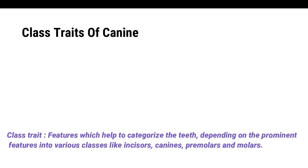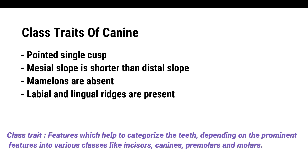Class Traits of Canine: Incisal edges are characterized by a pointed cusp, which is formed by mesial and distal slopes meeting at an angle. The mesial slope is shorter than the distal slope. Canines do not have mammelons but may have a notch on either cusp slope. They have a distinct labial ridge, and a lingual ridge is present, which divides the lingual fossa into mesial and distal fossa.